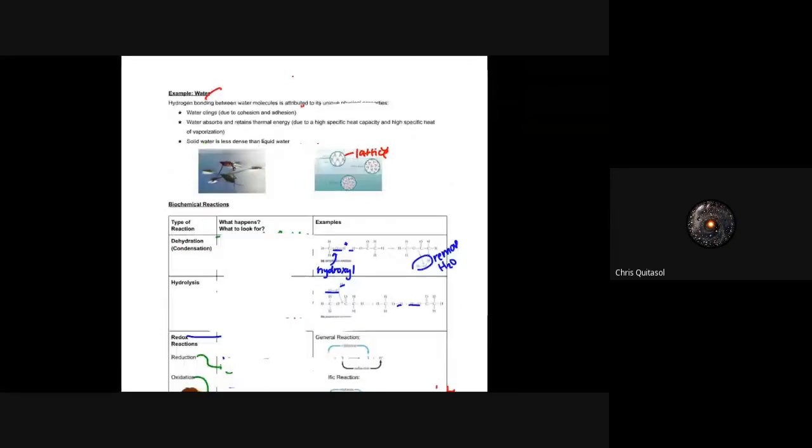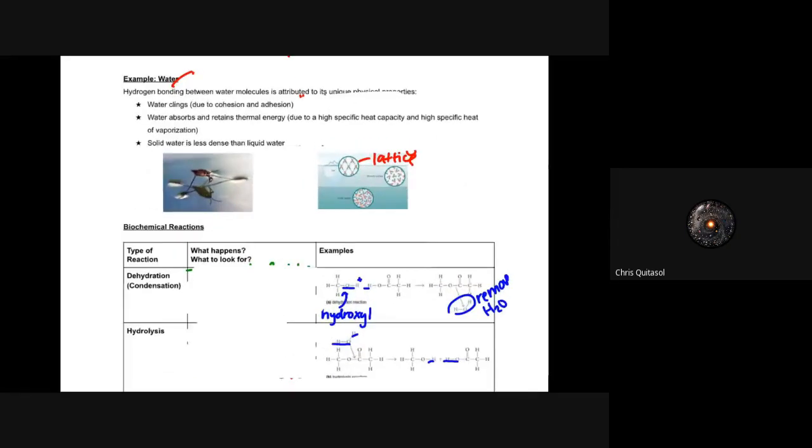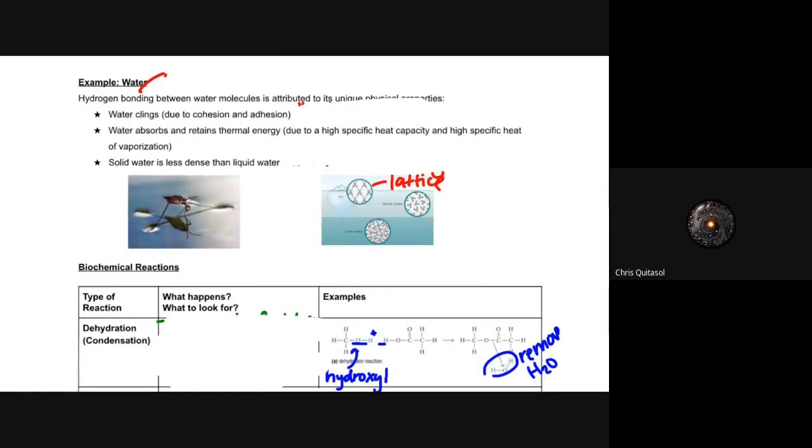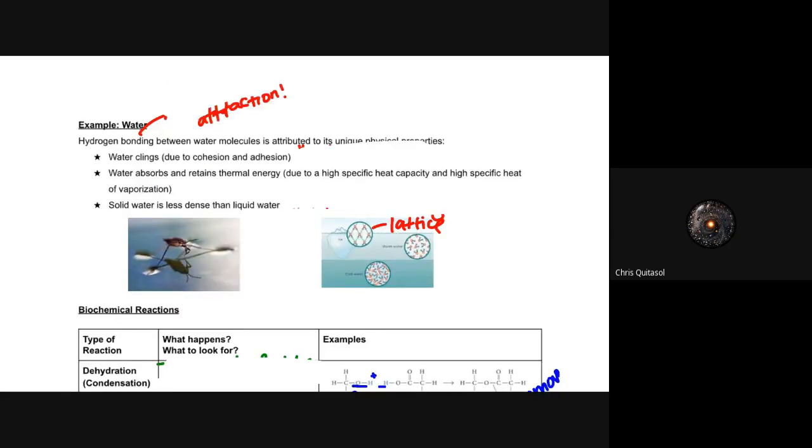Let's take a look at water as an example for these intermolecular forces because it's going to be the star of lesson three. At the end of the day, the hydrogen bonding between water molecules allows for its unique properties. Water is quite unique in the way that it can behave because it's allowed to make both strong and weak interactions and attractions with different molecules and atoms.